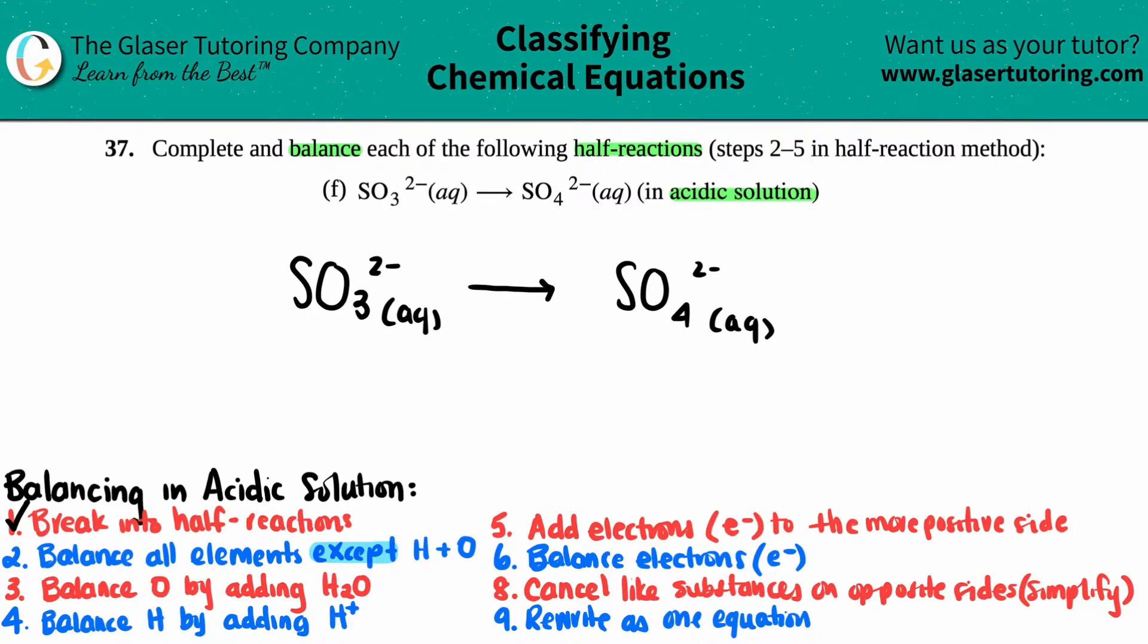Step two is we're always going to balance the elements except for hydrogen and oxygen. So you're not allowed to touch oxygen and you're not allowed to touch hydrogen at this stage of the game. So in this case, I'm only allowed to touch the sulfurs on both sides because I can't touch the oxygen. But if I look, I have one sulfur here and one sulfur here. So it's balanced.